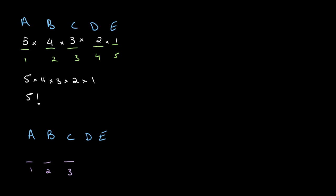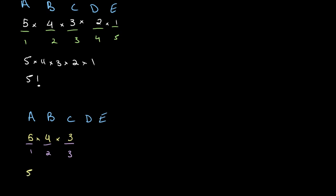In order to do this, we take a very similar approach to what we did in our last question. In our first spot, we have 5 people who are waiting to sit, so there are 5 possibilities. In our second spot, there are 4 people left, so for each of those 5 possibilities there are 4 more. In our third spot, there are 3 more people left to sit, so for each of these 4 possibilities there are 3 more possibilities.